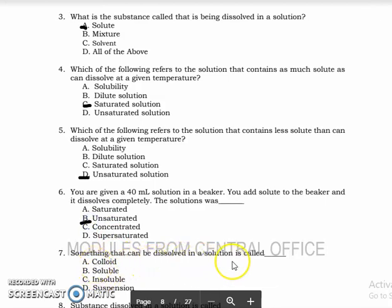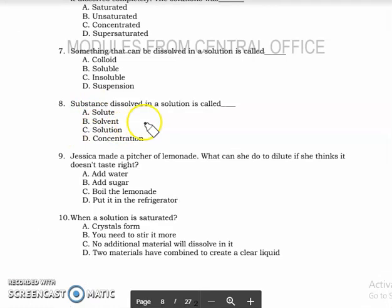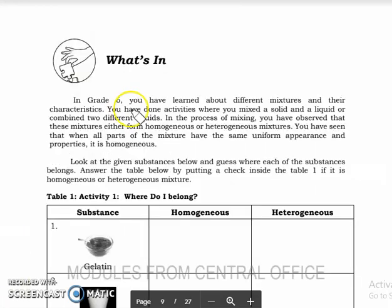Next, something that can be dissolved in a solution is called soluble. Let's continue for number 8. Substance dissolved in a solution is called solute. Next, Jessica made a pitcher of lemonade. What can she do to dilute if she thinks it doesn't taste right? Dilute. That's sugar. Next, when a solution is saturated, it means it has no additional material that will dissolve in it.